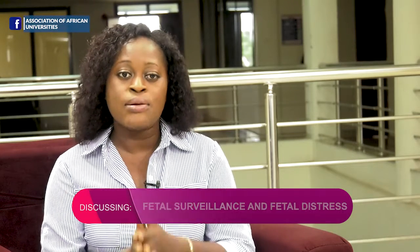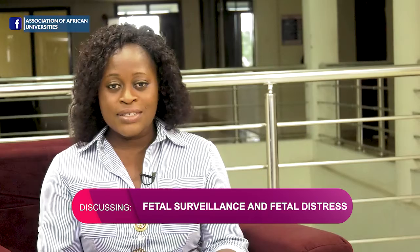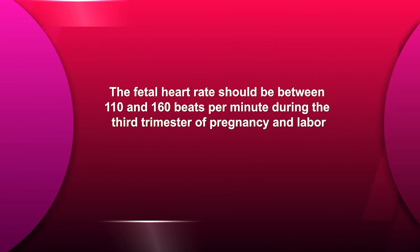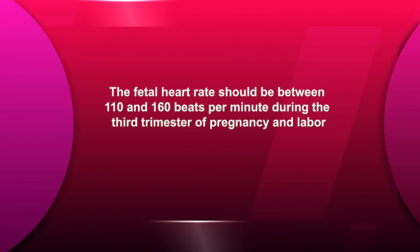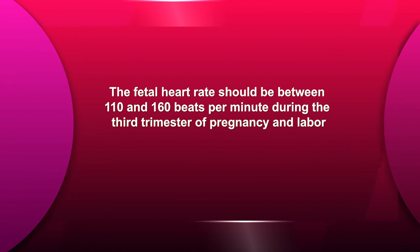What are some of the signs of fetal distress? Fetal distress is diagnosed based on fetal heart rate monitoring, and the fetal heart rate should be monitored throughout pregnancy and taken at every prenatal appointment. Doctors can use internal or external tools to measure the fetal heart rate, and it is most commonly measured via electronic fetal monitor. The fetal heart rate should be between 110 and 160 beats per minute during the third trimester of pregnancy and labor.